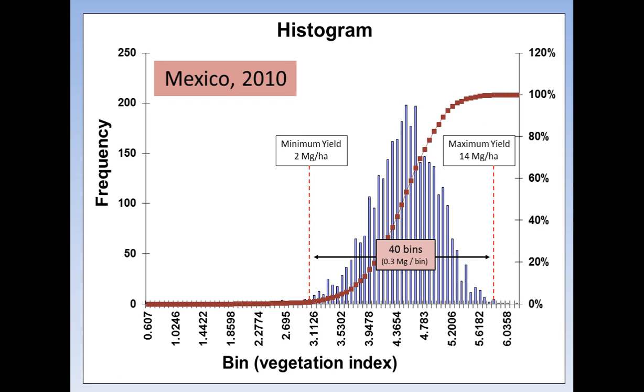But the way we use that, we would ask the farmer to tell us about the minimum yield that we would expect, and I used two megatons per hectare, and the maximum yield,